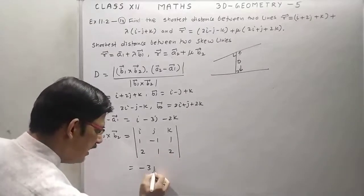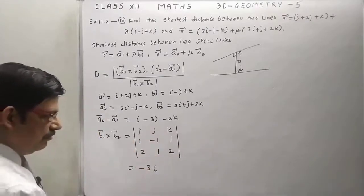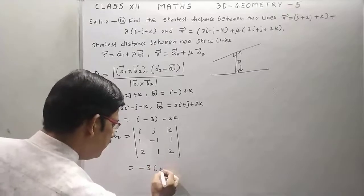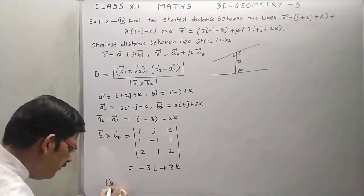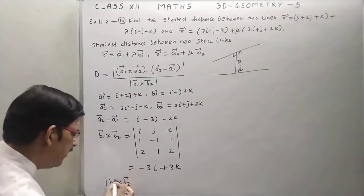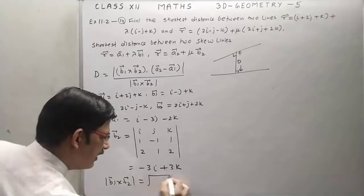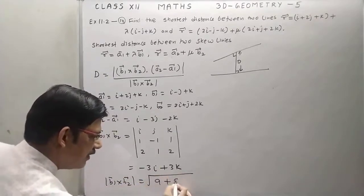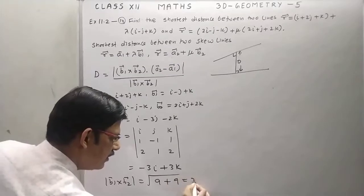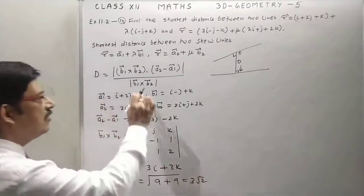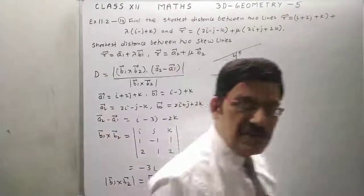We will get minus 3i and j is 0 and k is 1 plus 2, which is 3k. So find magnitude of b1 cross b2, we will get 9 plus 9, that is 3 root 2.